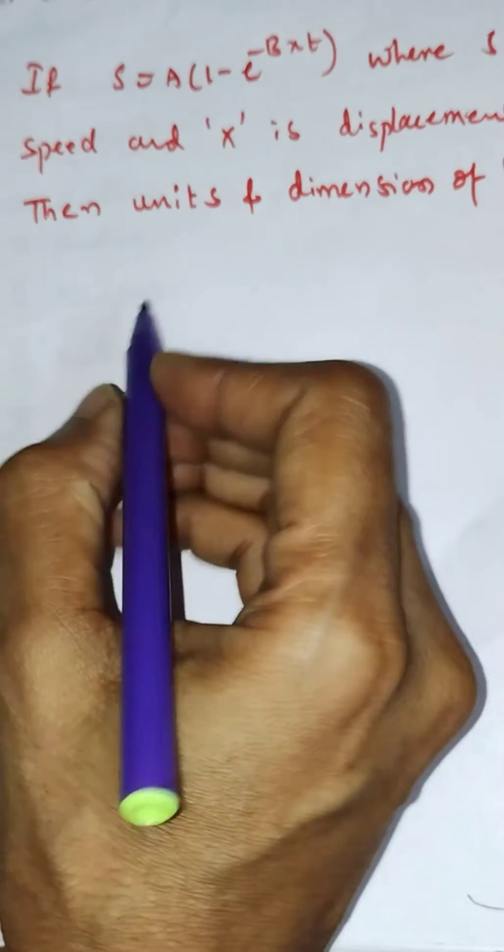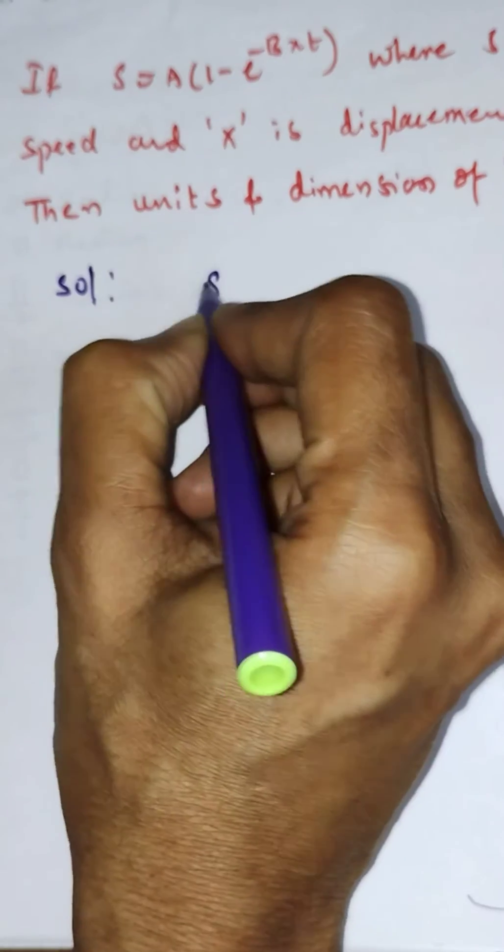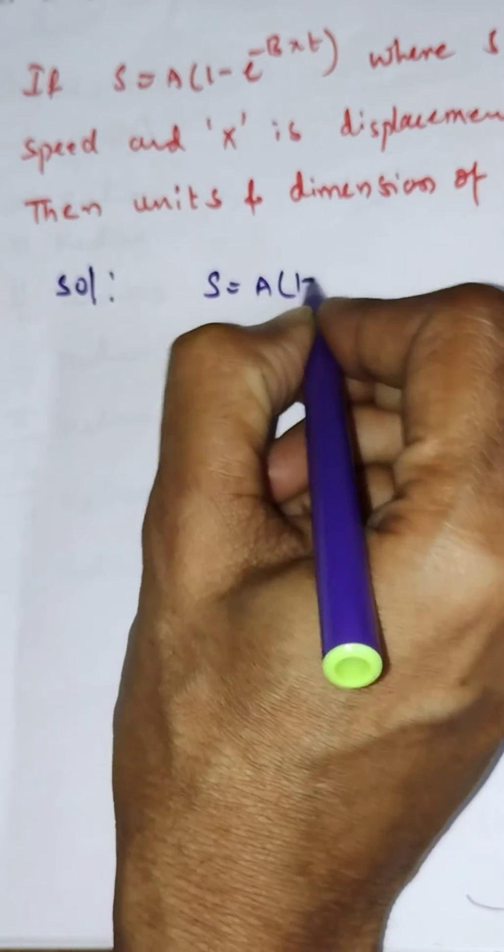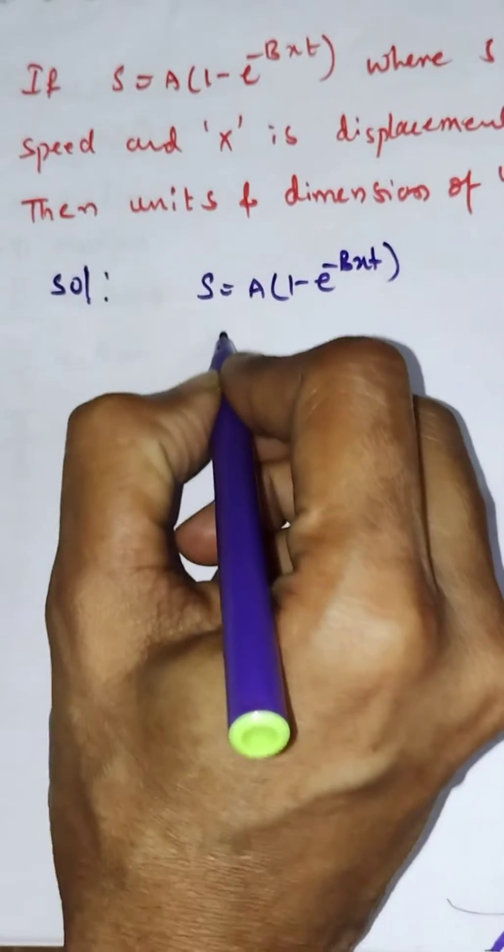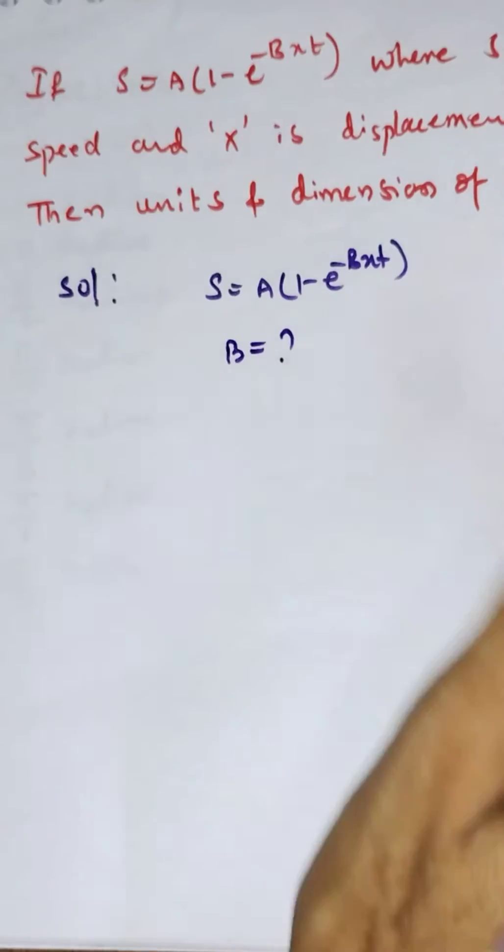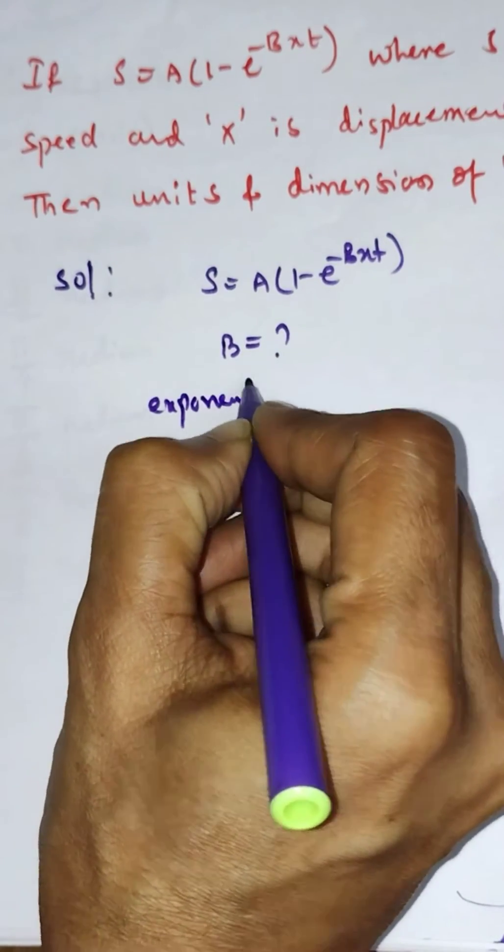Hello everyone, here is one more dimension formula question. The function given is S = A(1 - e^(-Bxt)), where S is speed and x is displacement. They are asking for the units and dimensions of B. You have to remember one important point: